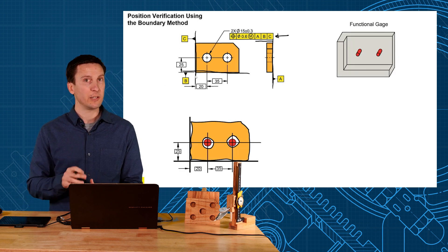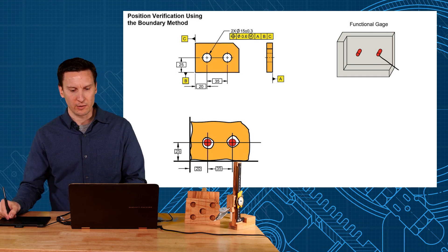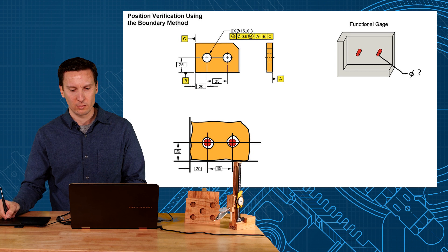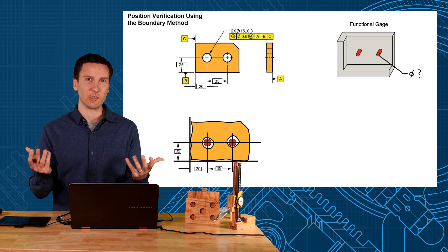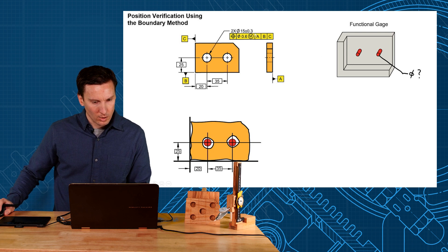And these red pins would be sized out to check that position tolerance. So what size would we make these pins? Virtual condition. So what is the virtual condition of this hole?